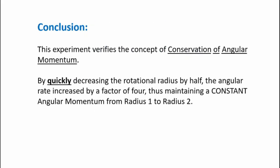So in conclusion, this experiment verifies the concept of conservation of angular momentum. Now, by quickly, and I mean quickly, decreasing the rotational radius by half, the angular rate increased by a factor of 4, thus maintaining a constant angular momentum from radius 1 to radius 2. So that's great. This experiment verifies the theoretical analysis.